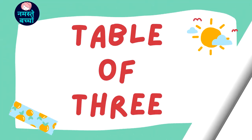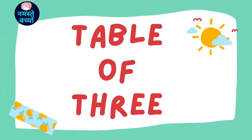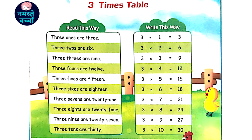Table of 3. 3 1's are 3, 3 2's are 6, 3 3's are 9.